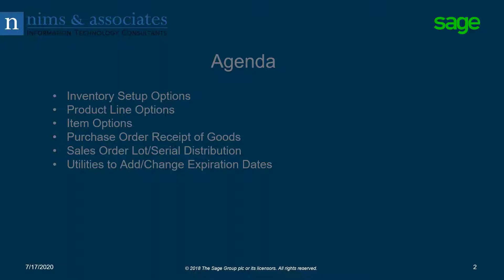Then we're going to go into purchase order receipt of goods entry and show you how to enter an expiration date during receipt of goods. Then we're going to show you how it works in sales order entry when we're doing lot and serial distribution. And lastly, we're going to talk about a new utility that allows you to add or change expiration dates for multiple items.